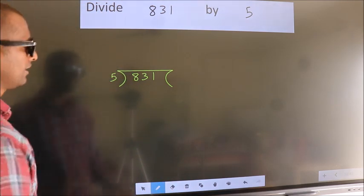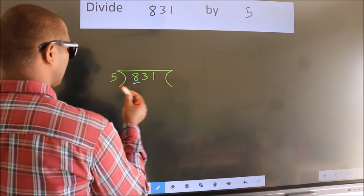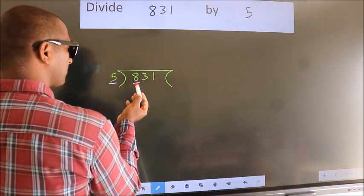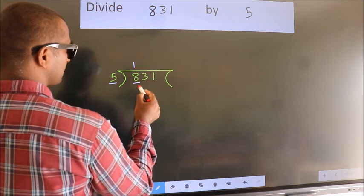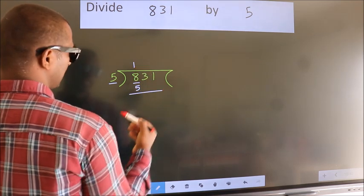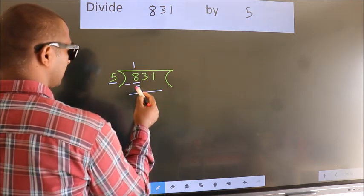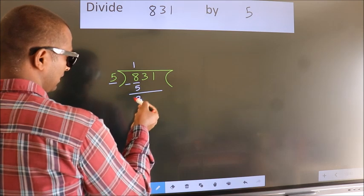Next, here we have 8, here 5. A number close to 8 in 5 table is 5 once 5. Now, we should subtract. We get 3. After this,